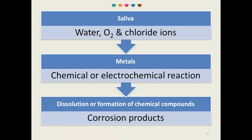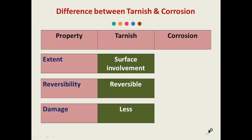How does this corrosion process occur in the oral cavity? Saliva contains water, oxygen, and chloride ions — everything favorable for corrosion. Water, oxygen, and high acids act on the metals. There is an occurrence of chemical or electrochemical reactions, and because of these reactions, there is a dissolution or formation of chemical compounds and a formation of corrosion products. Once the corrosion products get formed, these corrosion products again accelerate the process of corrosion.